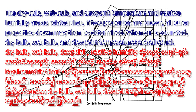The dry-bulb, wet-bulb, and dew-point temperatures and relative humidity are so related that if any two properties are known, all other properties may then be determined. When air is saturated, dry-bulb, wet-bulb, and dew-point temperatures are all equal.